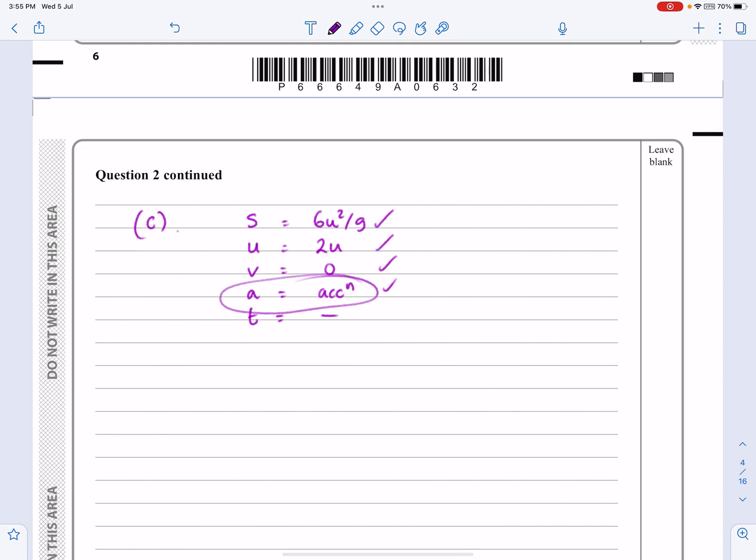Which formula connects S, U, V, and A? It's one of the more often used ones. V squared equals U squared plus 2AS. So what I can now do is work out what acceleration is going to be. So 0 equals - that's going to be 2U all squared - 2 lots of acceleration times 6u squared over g here.